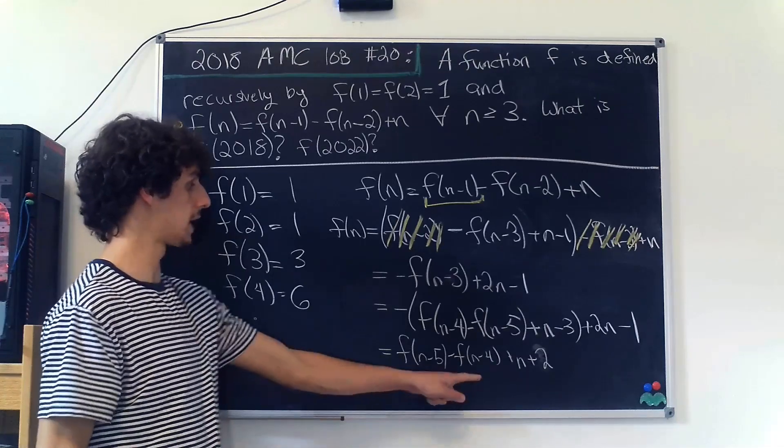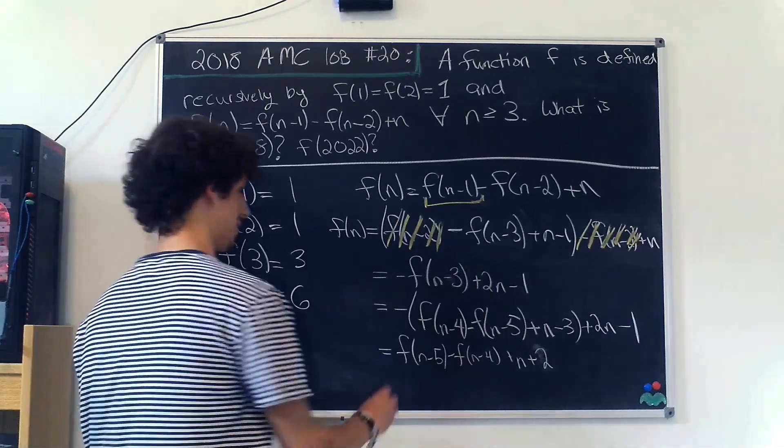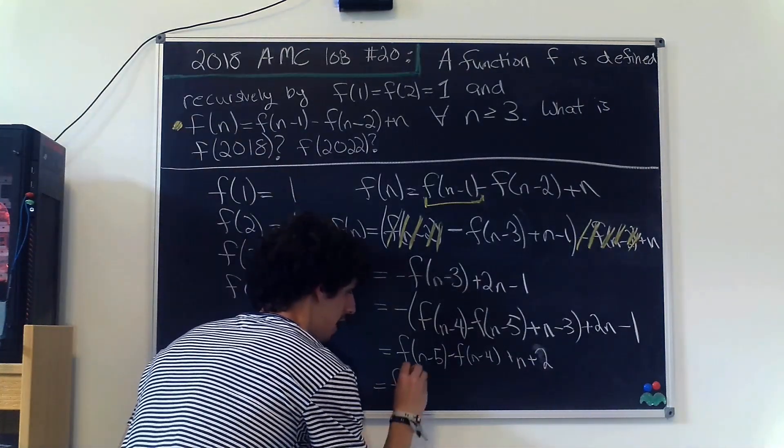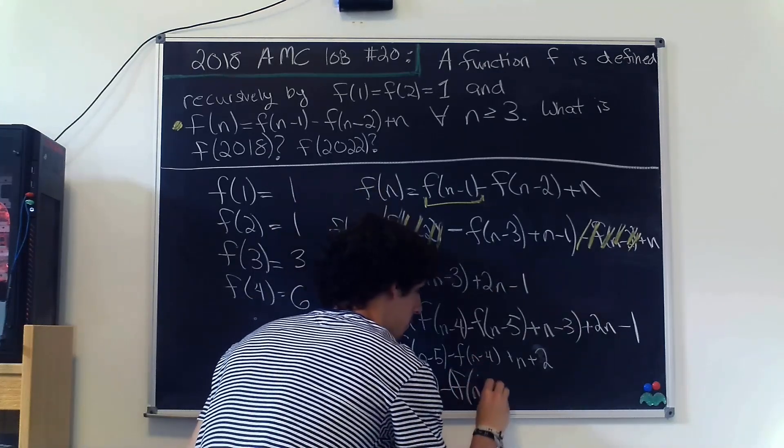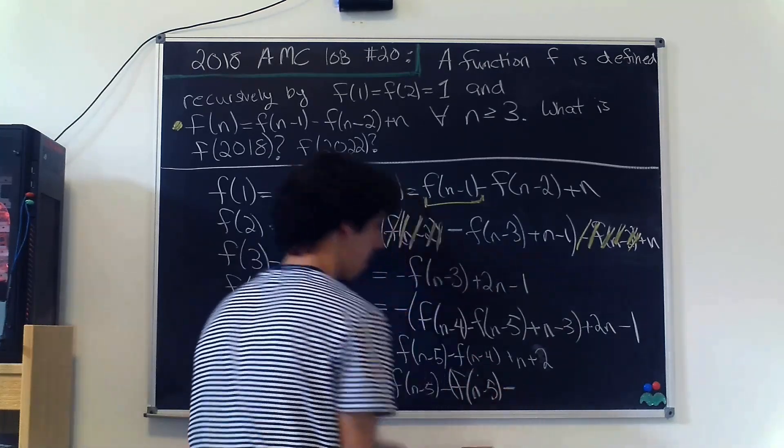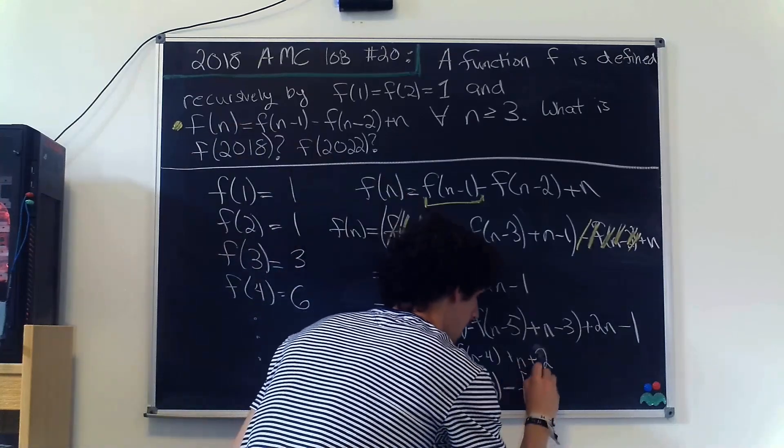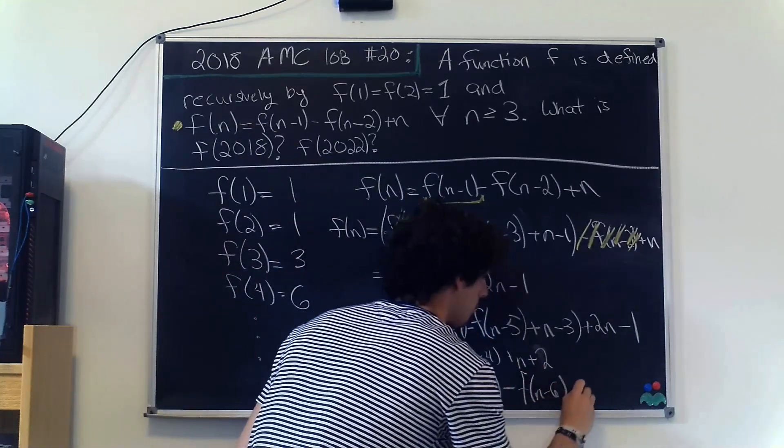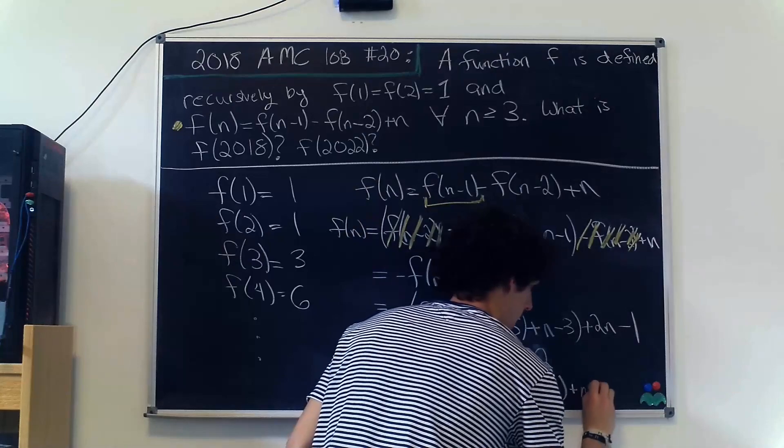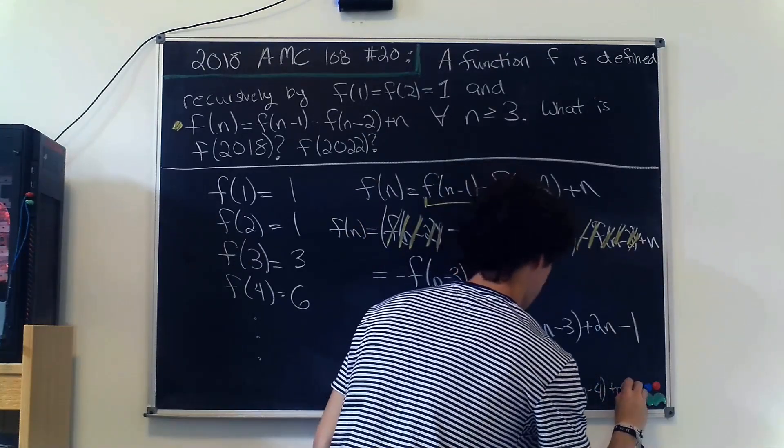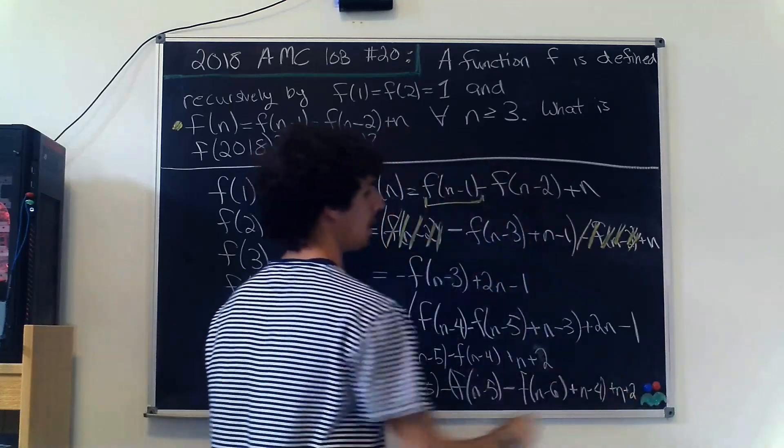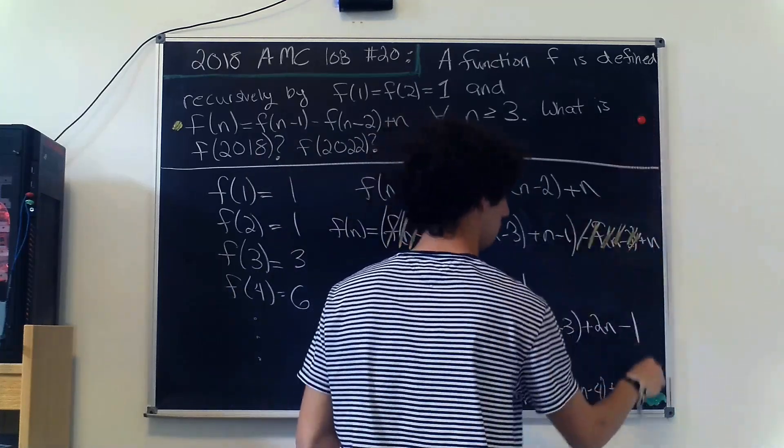Okay, but now let's do one more expansion but on this f(n-4) term. So we're going to have f(n-5) minus f(n-5) minus f(n-6) plus n-4 plus n plus 2. And my little guy over here is getting in the way, so I'm going to go ahead and move him up here.